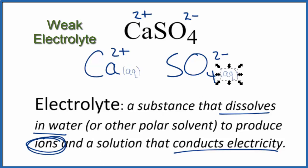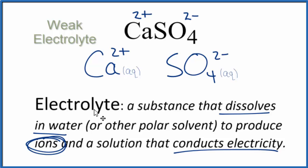But because calcium sulfate is only slightly soluble, there won't be very many ions. For that reason, we'll have an electrolyte, but it'll be a weak electrolyte. So in answer to our question, CaSO4, calcium sulfate, is a weak electrolyte. This is Dr. B, and thanks for watching.